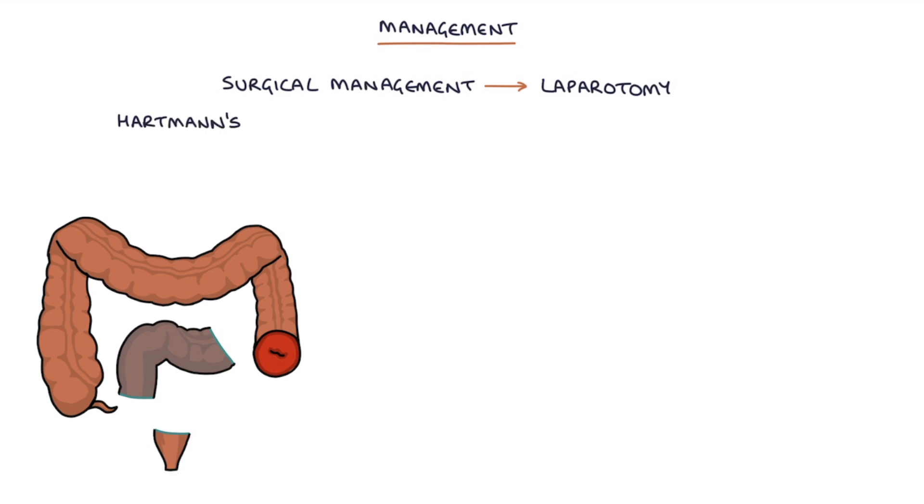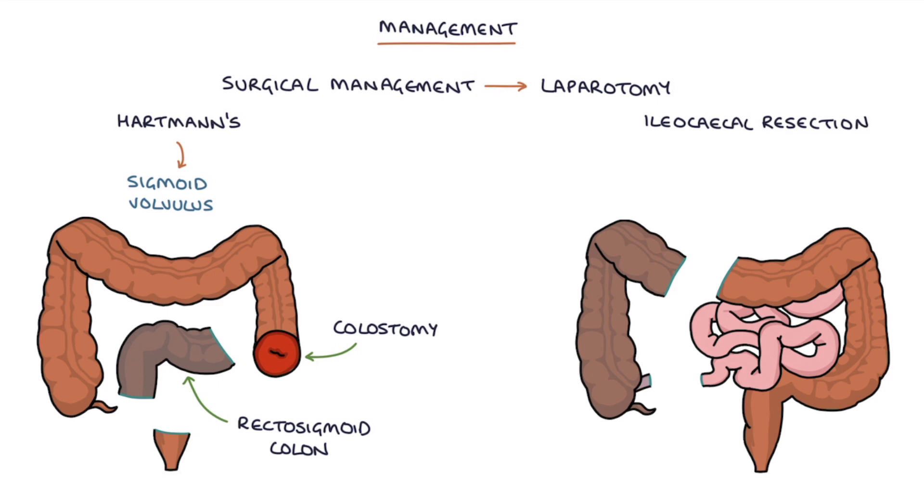A Hartman's procedure for a sigmoid volvulus which is removal of the rectosigmoid colon and formation of a colostomy, and an ileocecal resection or right hemicolectomy for a cecal volvulus. Essentially surgical management involves removing the section of bowel that's affected by the volvulus.